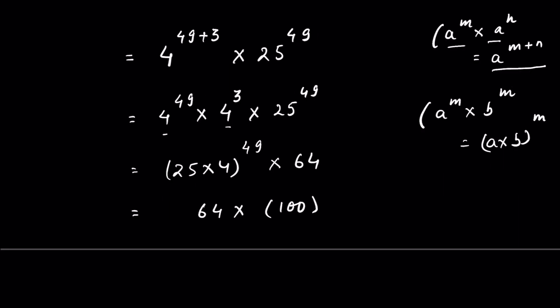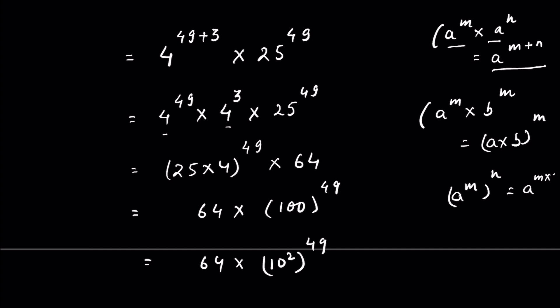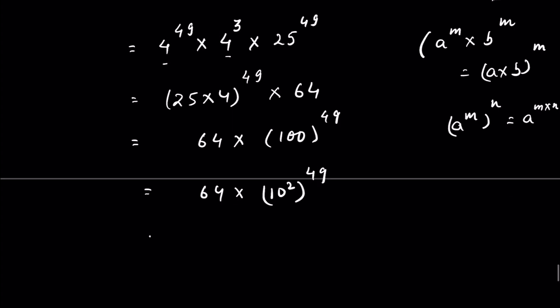And 4 to the power 3 can be written as 64. So 25 times 4 is 100, whole to the power 49, times 64. 100 can be written as 10 squared. Again there is an expression: a to the power m, whole to the power n, equals a to the power m multiplied by n. So it is now 64 times 10 to the power 49 times 2.